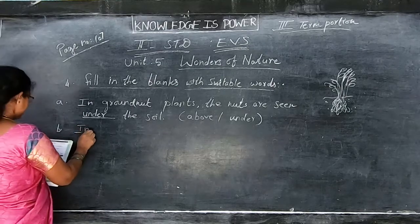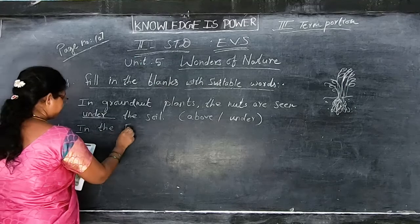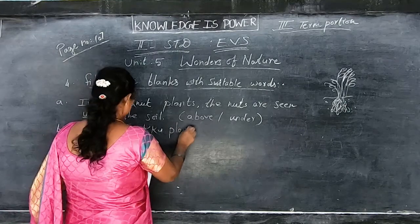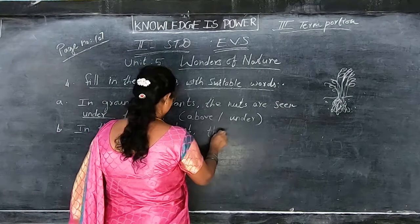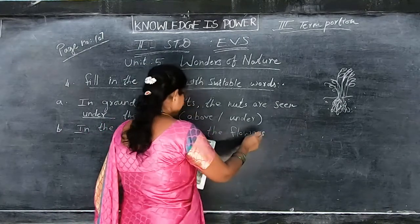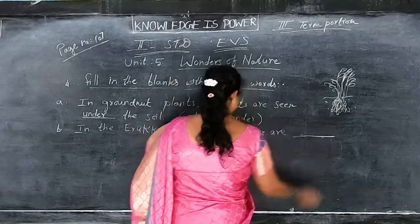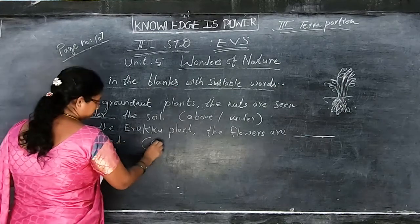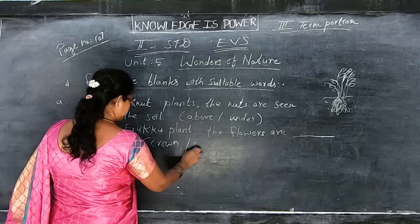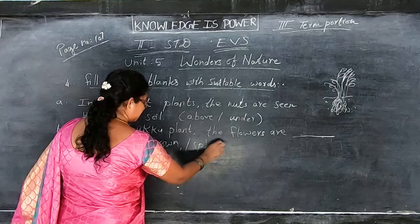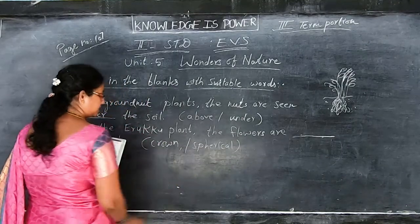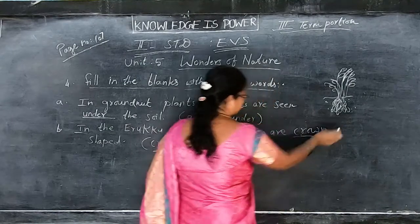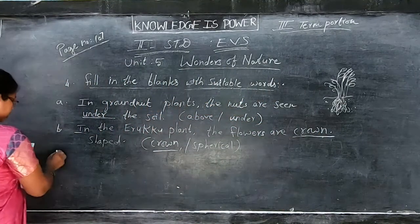The next one: In the irukku plant E-R-U-K-K-U, the flowers are dash-shaped. The choices are crown and spherical. Crown is the correct answer — C-R-O-W-N. It looks like a crown shape only. You write 'crown' in the dash, children.